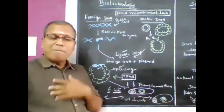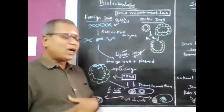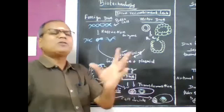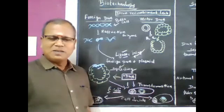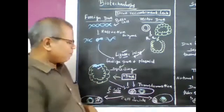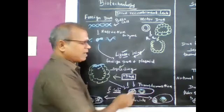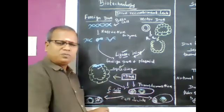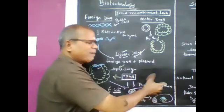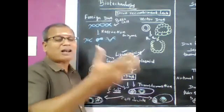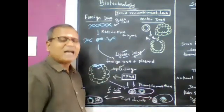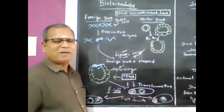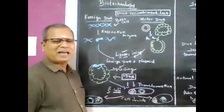Now you get recombinant DNA — also called hybrid DNA or rDNA — with the insulin-producing gene. You grow the bacteria in culture media. Transformation takes place — the recombinant DNA is taken up by the bacteria.